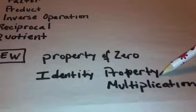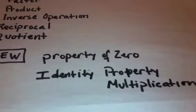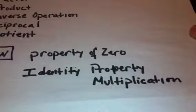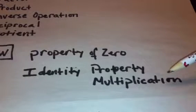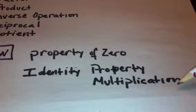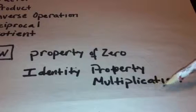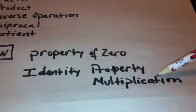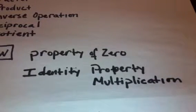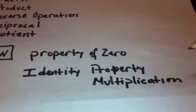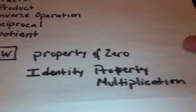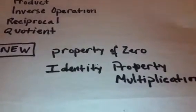The second new concept that really is not so new is the identity property of multiplication. So basically, with the identity property, we're able to see that any number times one is that number, and one times any number is still that number. For example, one times four is four, and four times one is four. So now that we've reviewed all of the vocabulary terms, let's move on.